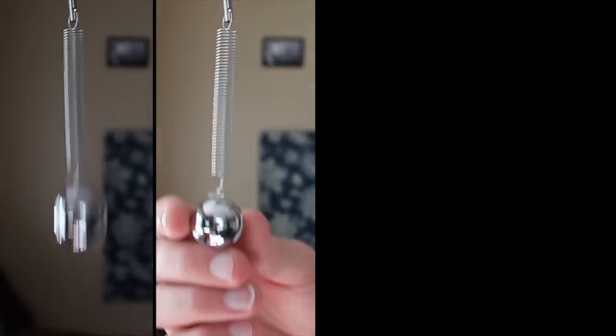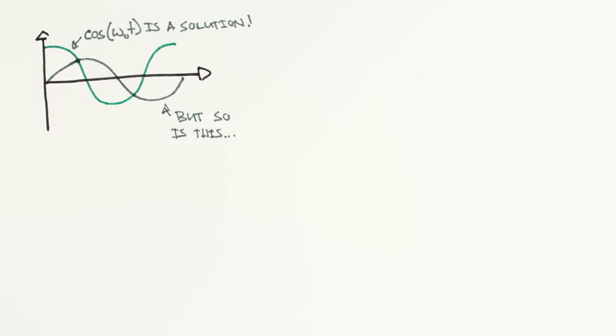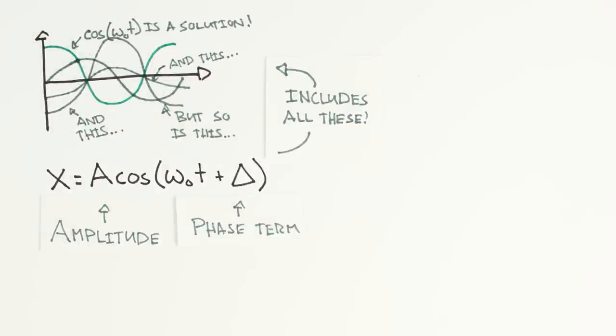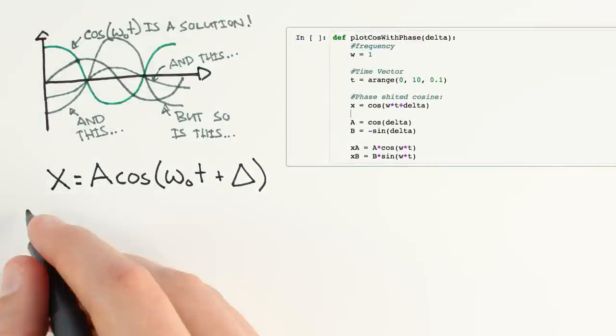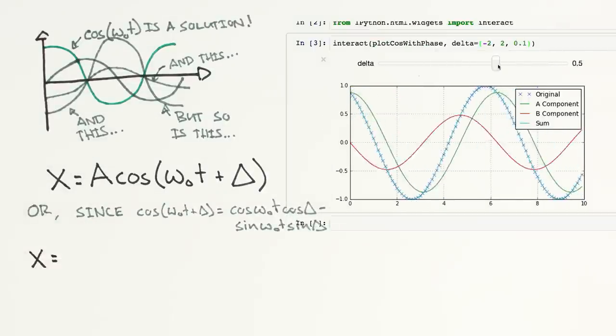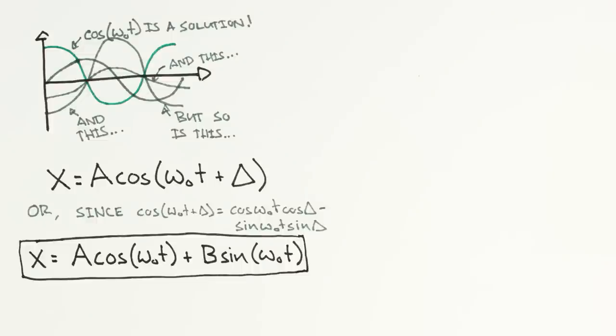Finally, our spring and mass could start moving at various speeds and positions, so our solution should take this into account. We could add a phase term inside our cosine to allow our graph to start at various points, but a simpler approach is to take advantage of the fact that we can express an arbitrary phase as the sum of sines and cosines and write our solution as a cosine omega zero t plus b sine omega zero t. This is our general solution to our spring and mass problem.